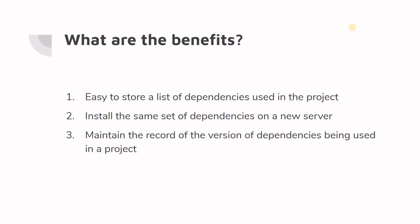The second most important benefit is that it allows you to install the same set of dependencies on a new server. Suppose a project runs on your machine and you want to copy it to another machine or server — you just run pip install -r requirements.txt on the new server and all the dependencies get automatically installed. That's a great feature.